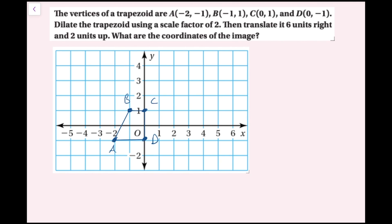Now I'm going to dilate this trapezoid with a scale factor of two, meaning I multiply each component by two. So a becomes (-4, -2), b becomes (-2, 2), c becomes (0, 2), and d becomes (0, -2). All I did was multiply all components by two. I'll draw the dilated figure with a dotted line.